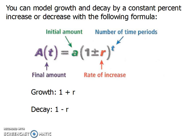You can model growth and decay by a constant percent increase or decrease with the following formula. So you have your initial amount. That kind of helps you realize, hey, by the way, that's your starting point. So that's kind of where you go through your y-axis or your y-intercept.